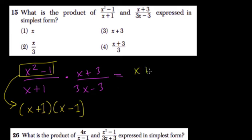And watch how nice this is now. We have x plus 1 times x minus 1 times x plus 3, and don't multiply yet. Try to cancel out if you can.